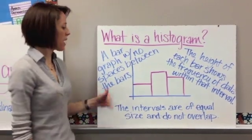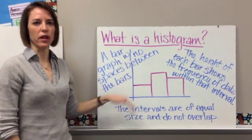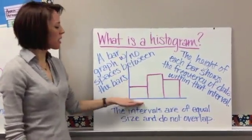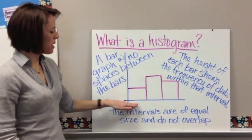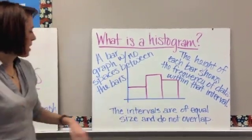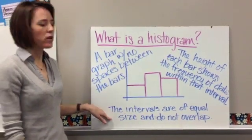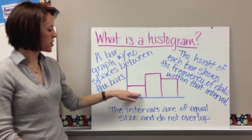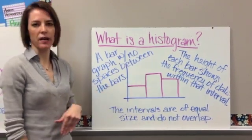Whereas a normal bar graph is talking about just amounts in a certain category, like this many people like dogs, this many people like cats, and so forth. This is talking about intervals, so this would represent maybe 1 through 4 and 5 through 8. Okay, and the intervals are going to be of equal size, and they do not overlap, which means that the data that's in this bar of the histogram does not overlap with the data that's in that bar.